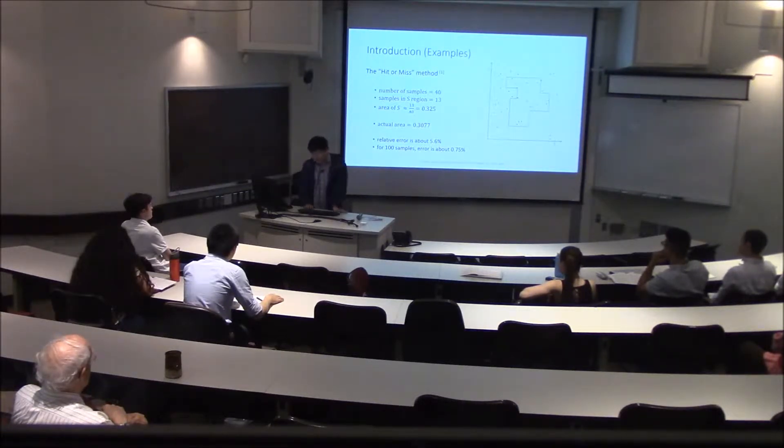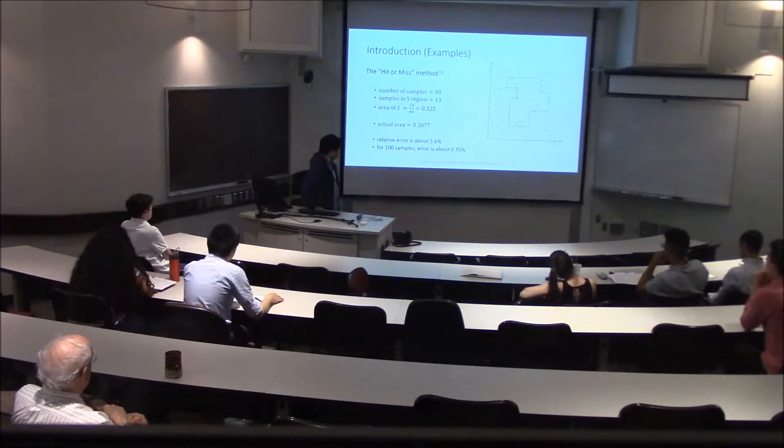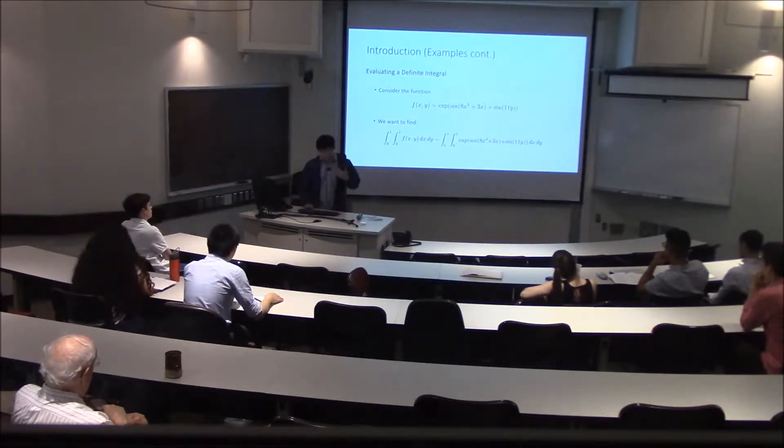If we do 40 points, we count 13 points in the region and then we get an approximation of 0.325, whereas the actual area using the coordinates is 0.3077. For a hundred samples, the relative error goes down quite a bit.